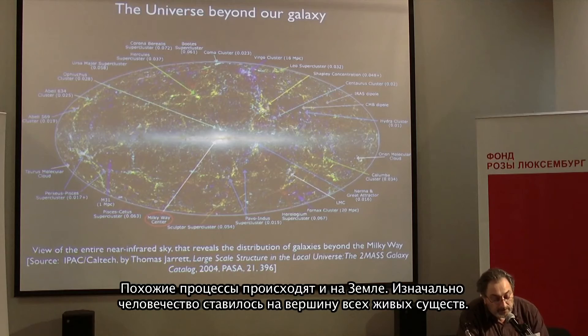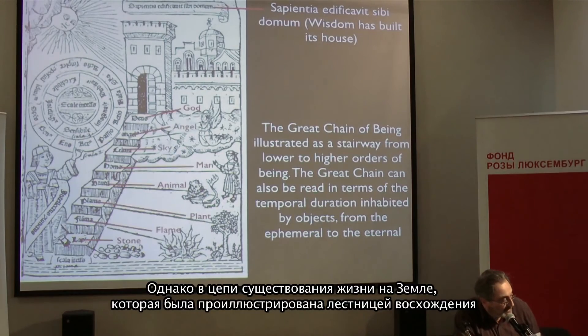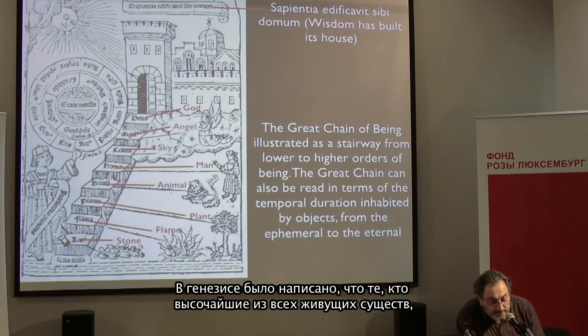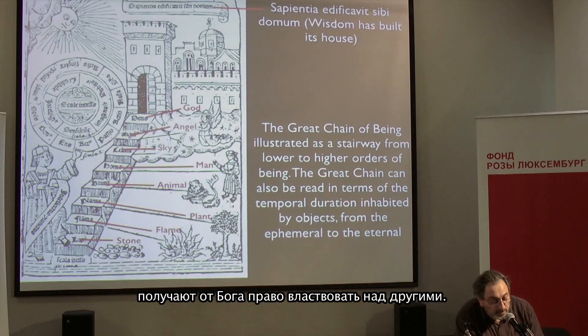In the beginning, humankind was put on top of living beings. In the chain of being, illustrated as a stairway from lower to higher order of beings, humans are just before the sky, the angels and God. In Genesis, man — who is the chosen creator on Earth, the first and highest among living beings — gets from God the dominion over all creatures. Three centuries after Copernicus, Darwin provided a new contribution to the relativization process by depriving the human species of its position at the top of the pyramid.